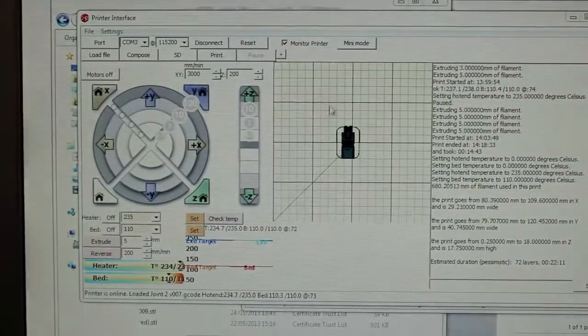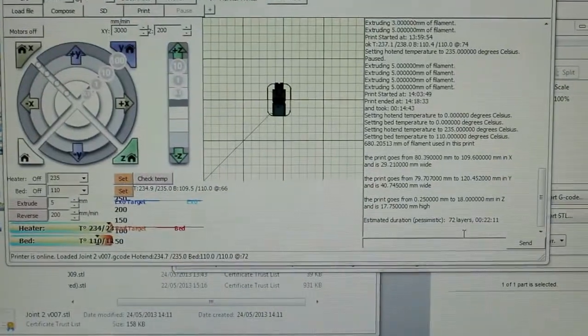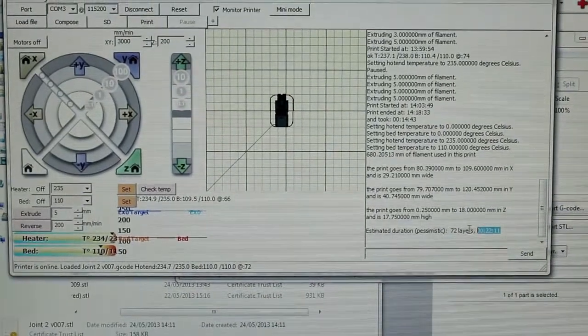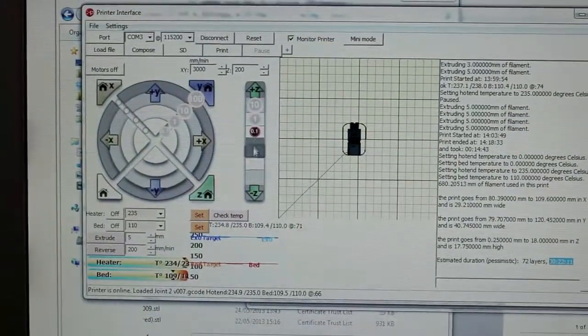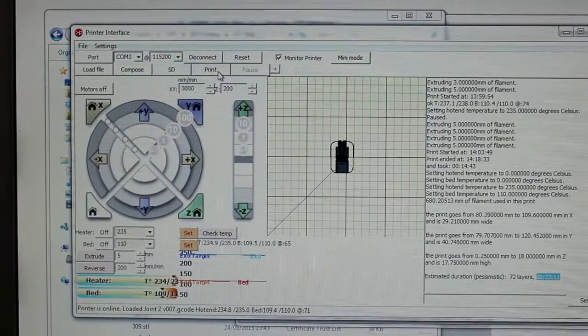This software here interfaces with the printer and gives an estimation of the time that it's going to take to build the part. All of the parts that you'll see in this video took between 15 minutes and 45 minutes to make.